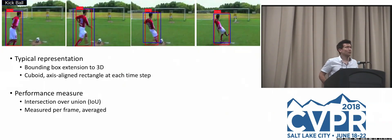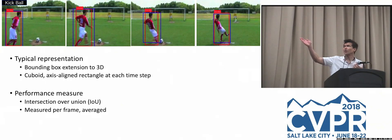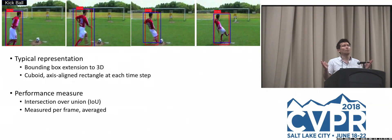The typical representations used involve axis-aligned bounding boxes extended to 3D. In a video of someone kicking a ball, ground truth annotations put bounding boxes in each frame indicating the spatial extent of the person who is kicking at that time. Sometimes this persists over the entire video; sometimes there are moments where the person is kicking and moments where they are not. Performance measures use intersection over union (IOU) between ground truth and predicted boxes, averaged over time.